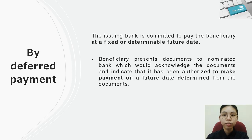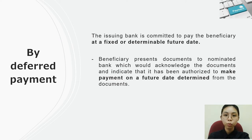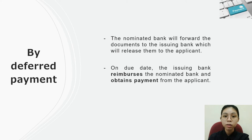If the credit provides for payment by deferred payment, the issuing bank is committed to pay the beneficiary at a fixed or determinable future date. The beneficiary presents documents to the nominated bank, which acknowledges the documents and indicates it has been authorized to make payment on a future date determined from the documents. Then the nominated bank forwards the documents to the issuing bank, which releases them to the applicant. On the due date, the issuing bank reimburses the nominated bank and obtains payment from the applicant.